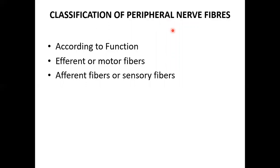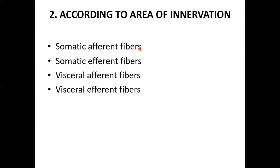Peripheral nerve fibers are classified according to function as afferent or efferent. Efferent fibers are motor fibers carrying impulses from the CNS to effector organs like skeletal muscles; afferent fibers are sensory fibers taking impulses from sensory organs to the CNS. They are further classified into somatic afferent, somatic efferent, visceral afferent, and visceral efferent fibers based on the area of innervation.